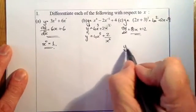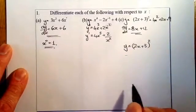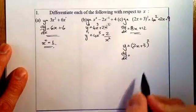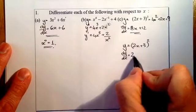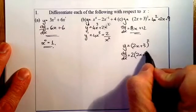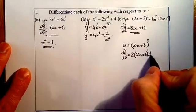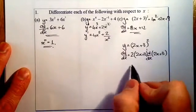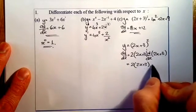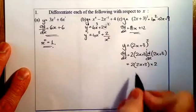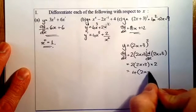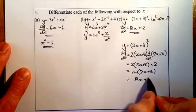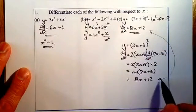Alternatively, using the chain rule method: multiply the front by 2, keep the bracket, reduce the power to 1, then differentiate inside the bracket to get 2. This gives 2 × 2 × (2x + 3) = 4(2x + 3) = 8x + 12 — exactly the same answer as multiplying out first.